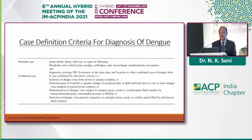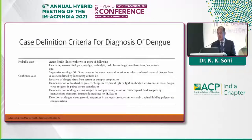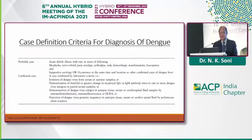To confirm dengue fever, demonstration of a four-fold or greater change in the reciprocal IgG or IgM antibody titer — the immunological response to one or more dengue virus antigens — in paired serum samples is needed for confirmation.